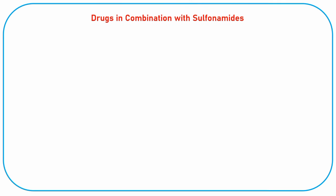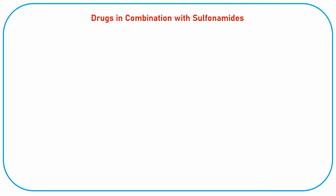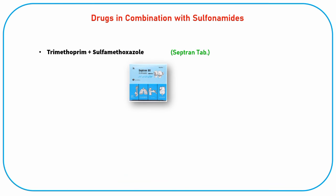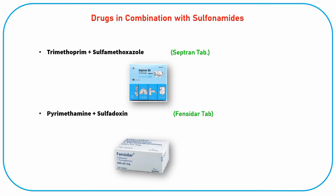Drugs in combination with sulfonamides include trimethoprim plus sulfamethoxazole, present in Septrin tablet, and pyrimethamine plus sulfadoxine, present in Fansidar tablet.